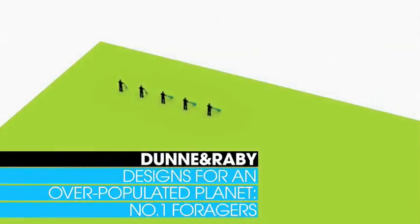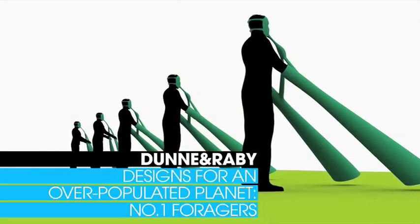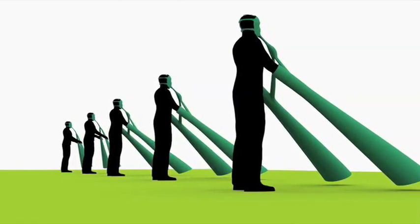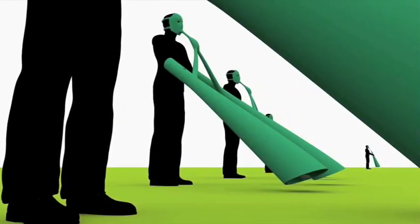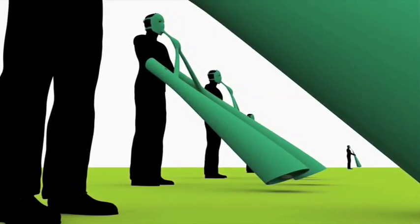Designs for an Overpopulated Planet, number one, Foragers by Dunne and Raby, considers that the government will not intervene favorably, leaving it up to the citizens to make solutions from the bottom up.